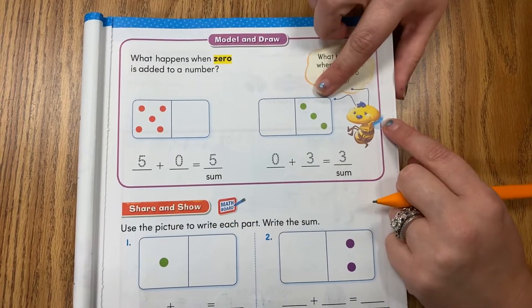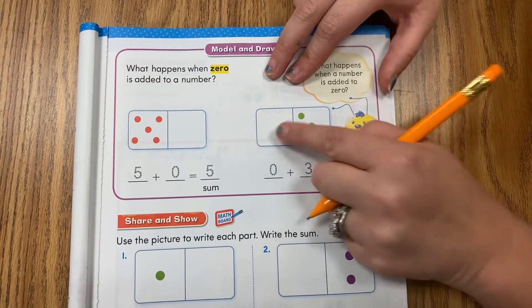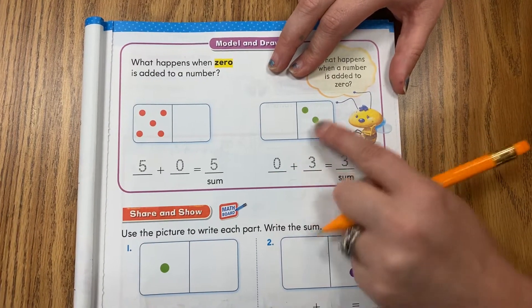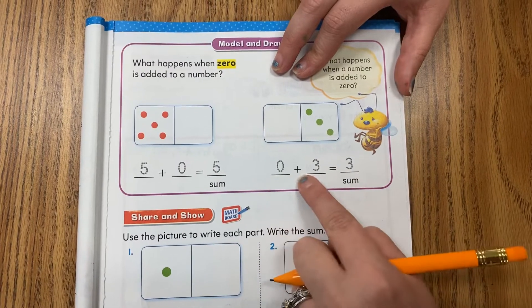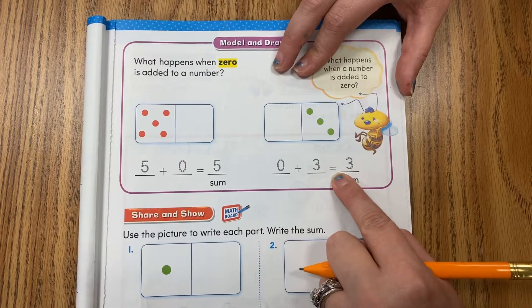They gave you the same example right here, but they switched the numbers. So there was zero here, so we have a zero. Three dots here, so we have a three. Zero plus three is the same as three.